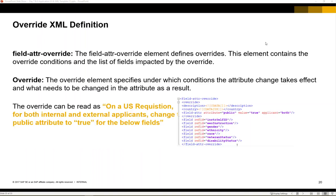Let's take a look at the example on the right-hand side. We can see the beginning of the field attribute. We can see the country is US, which can be read simply as 'on a US requisition' — meaning the standard field country on the requisition is set to US for United States. Next we see the field attributes: the attribute we are talking about is public and the value is true. This means that in the field definition these fields are defined as public equals false, but we are using this override to change that value to public equals true where the job requisition country is equal to US.